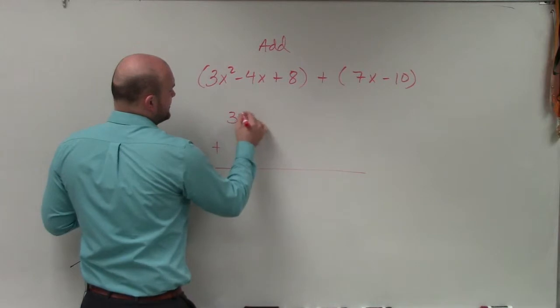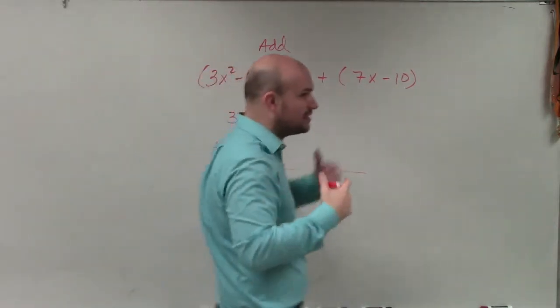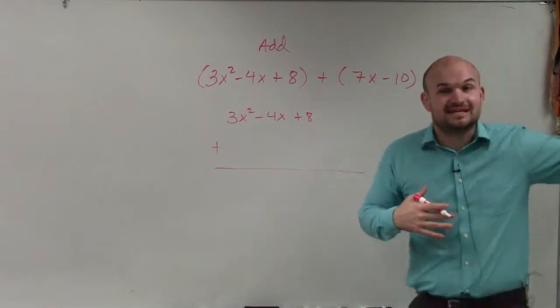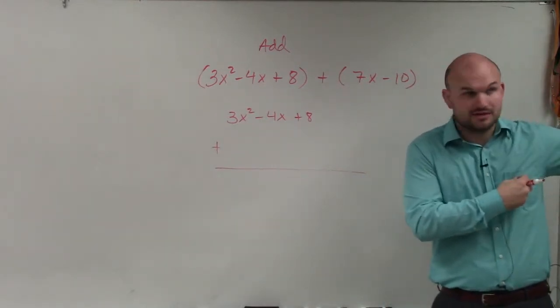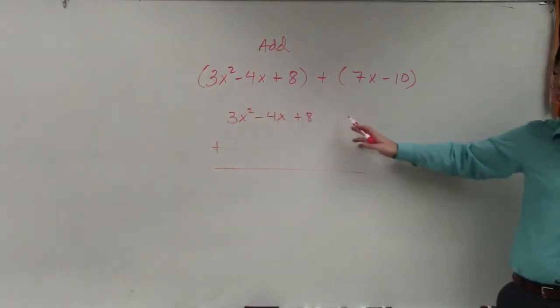So I'm going to take my first problem, which would be 3x² - 4x + 8. Now, when doing this, you're going to want to make sure that you have it in descending order. You guys remember that descending order with the largest exponent first, and then going down in descending order.